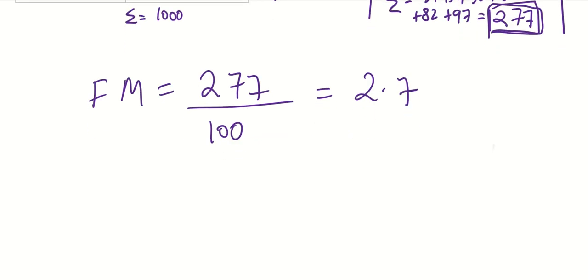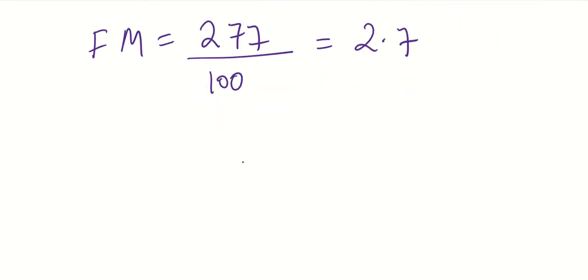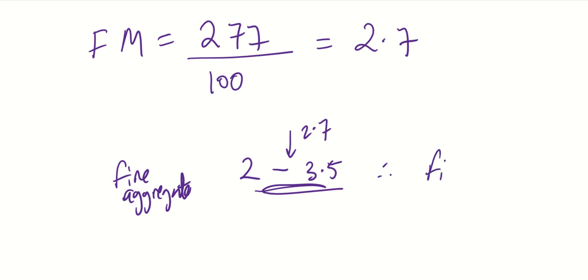So to classify this aggregate, remember that in the standards, they usually give you a threshold. So for fine aggregates, that's usually between 2 to 3.5. So 2.77 lies somewhere between that threshold. And therefore you need to classify it as a fine aggregate.